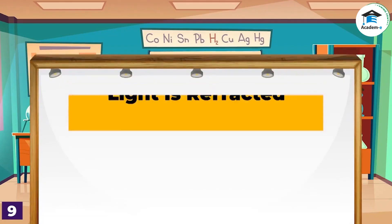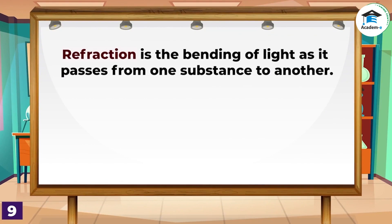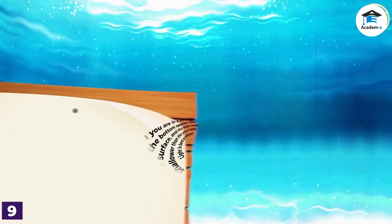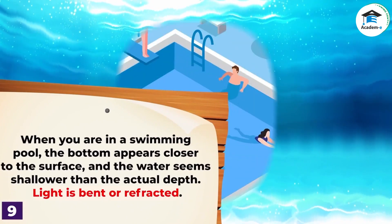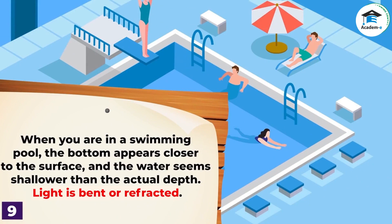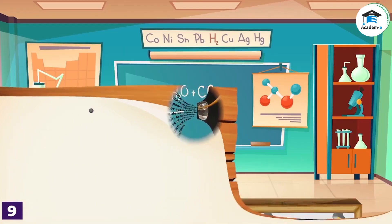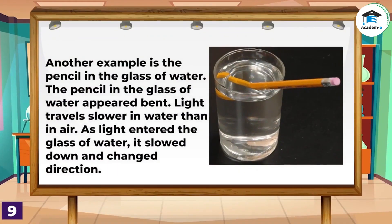Light is refracted. Refraction is the bending of light as it passes from one substance to another. When you are in a swimming pool, the bottom appears closer to the surface and the water seems shallower than the actual depth. Another example is a pencil in a glass of water — the pencil appears bent because light travels slower in water than in air. As light entered the glass of water, it slowed down and changed direction.